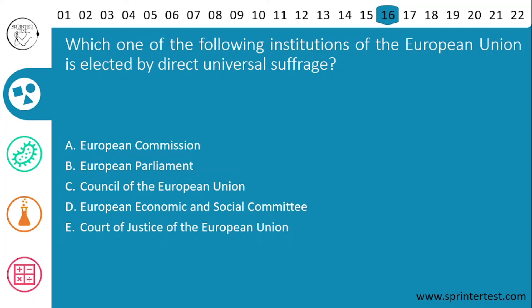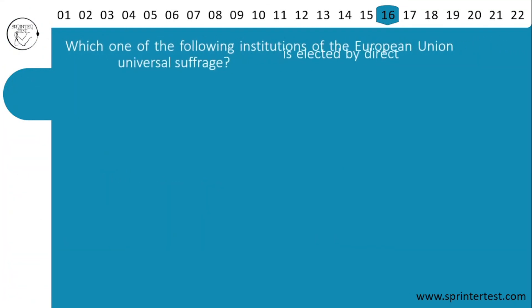Question 16: which institution of the European Union is elected by direct universal suffrage — meaning elected by the vote of the people? The options are: A) European Commission, B) European Parliament, C) Council of the European Union, D) European Economic and Social Committee, E) Court of Justice of the European Union. The correct answer is B, the European Parliament. That concludes today's discussion.